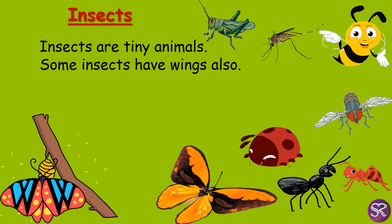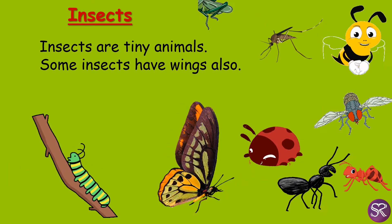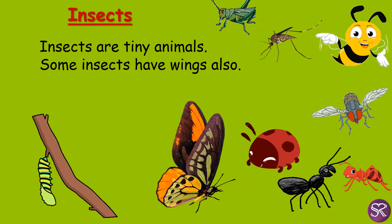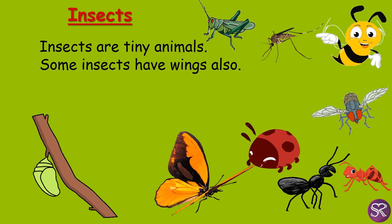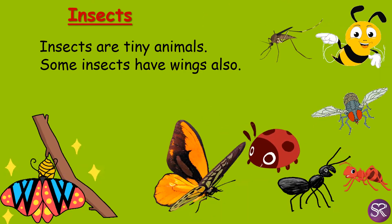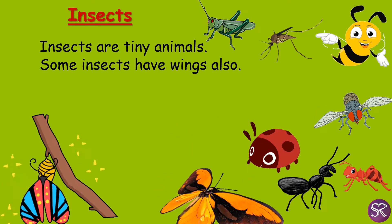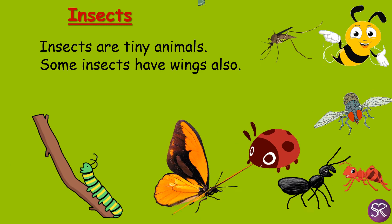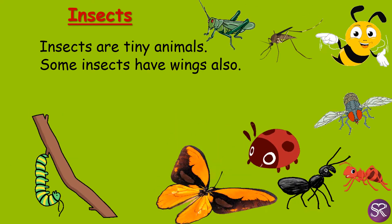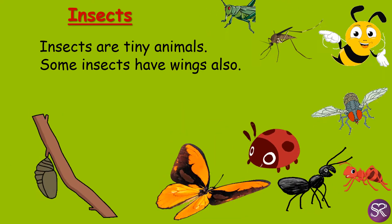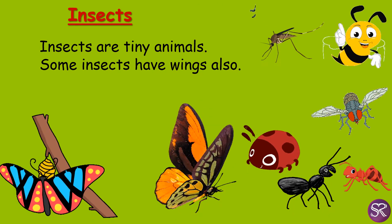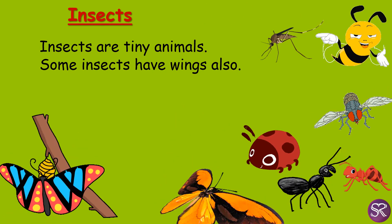Some insects have wings also. Some insects like butterfly, honeybee, housefly, mosquito, grasshopper — they all have wings. They can fly with the help of their wings.